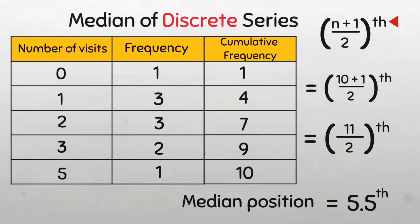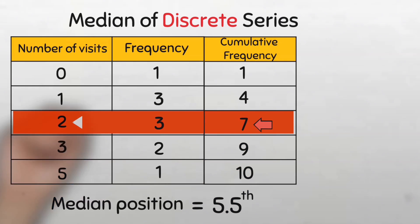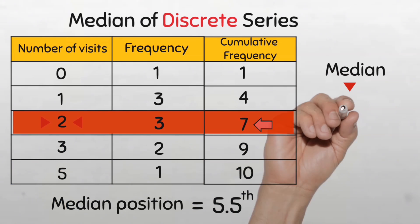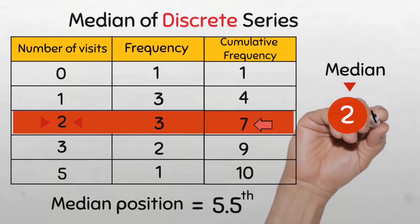Next we will need to locate the median value. To do this, we'll also use the cumulative frequency. The median is going to be at the cumulative frequency value which is just above the median position. If we look at the cumulative frequency, the one just above the 5.5th position is 7. So we'll just trace this back to our original number of visits, and we see that our median number of visits is 2 visits.